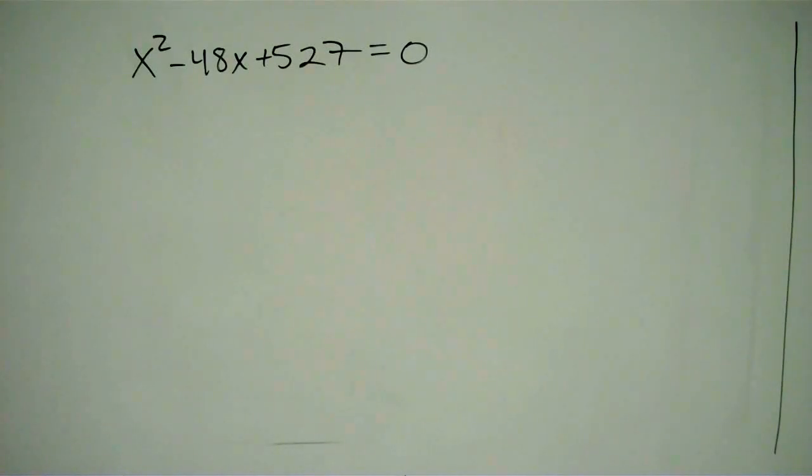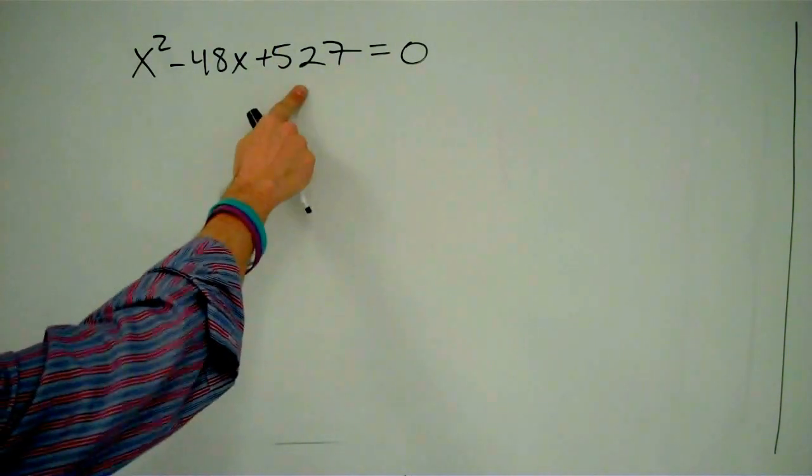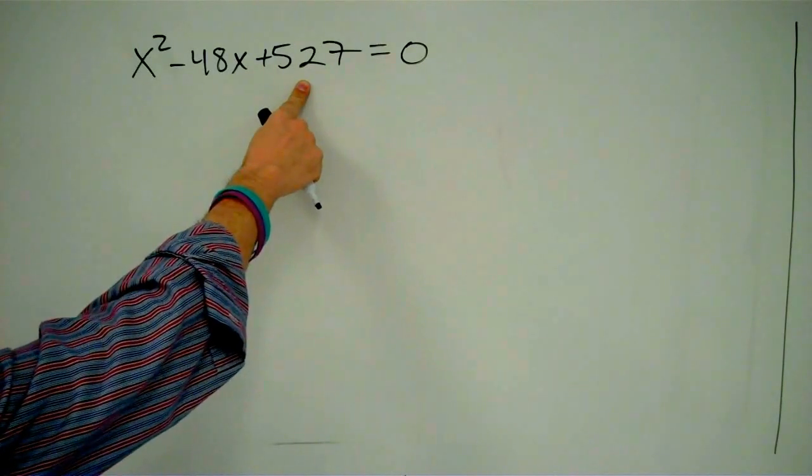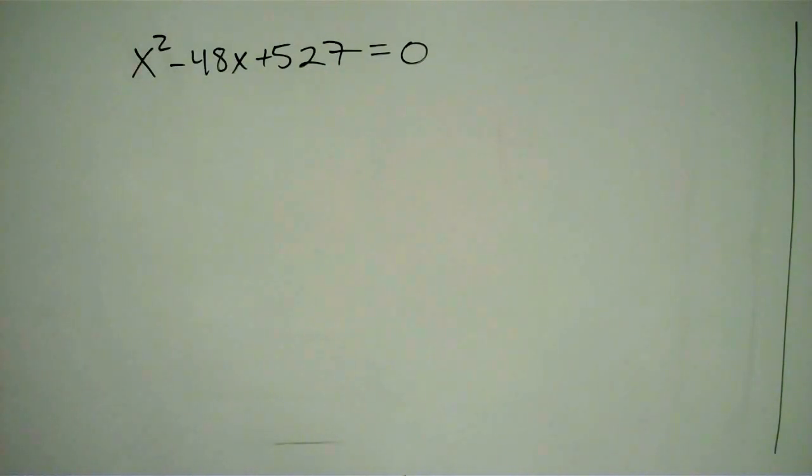Today we're going to solve this quadratic equation, and so far the method that we always use to solve quadratic equations is factoring. But as I look at this monster here, 527, I'm just really not looking forward to trying to find the factors of a number like 527, so I'm wondering if there might be another way to go about this. And as you may have guessed, there is.